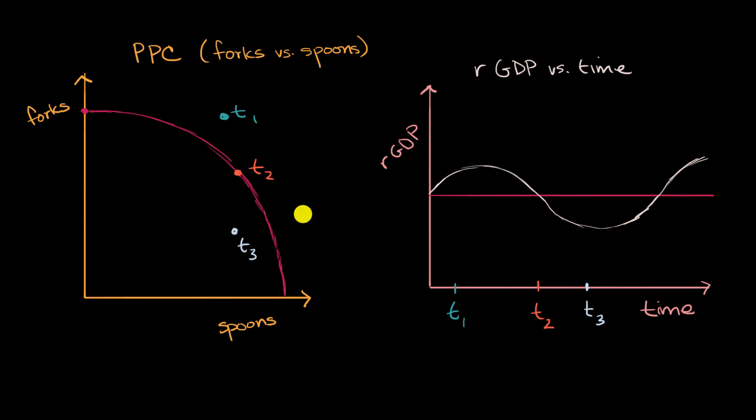What we have here are two different visualizations of a country's output at different points in time. You might recognize here on the left we have a production possibilities curve for this country. And it's a very simple country that either produces forks and or spoons.